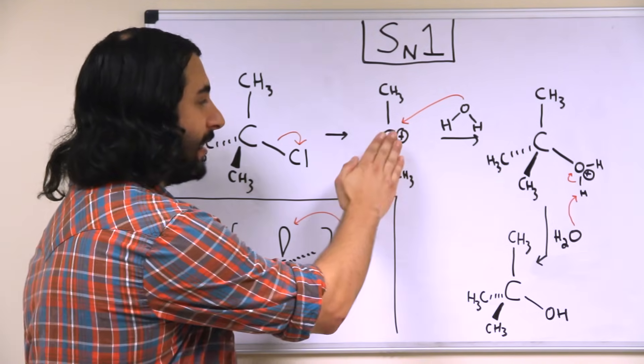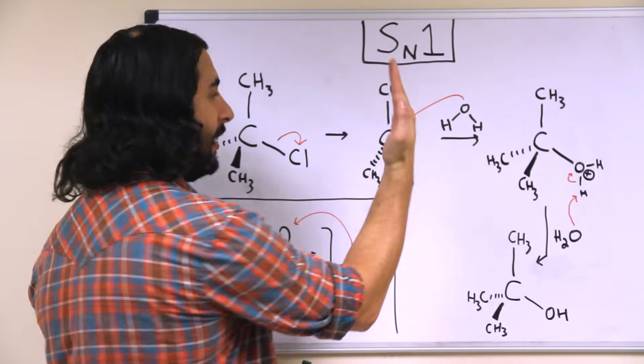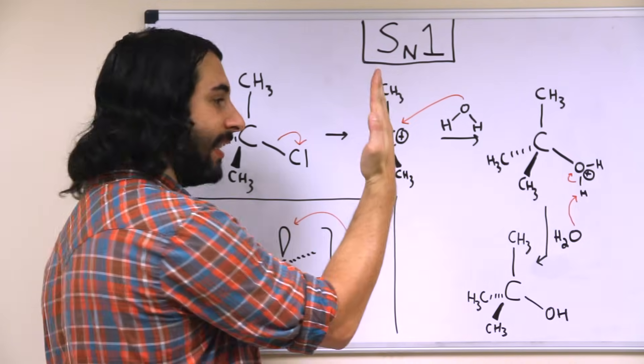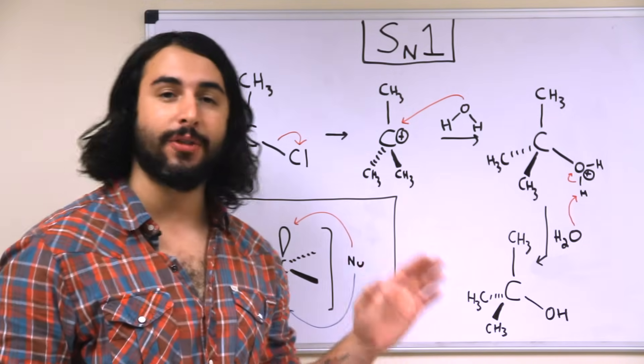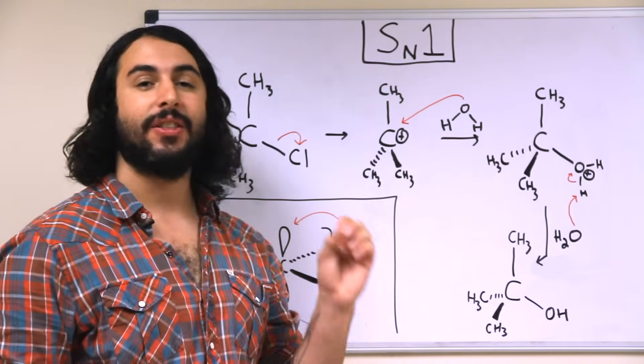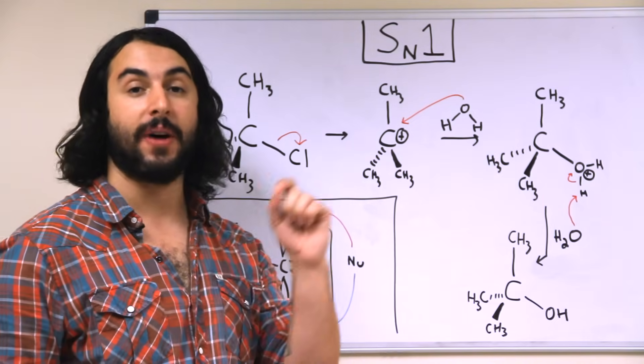So basically, this molecule is a plane perpendicular to the board. We're looking at it edge-on like this. So now that we have the carbocation intermediate, the second step is for the nucleophile to attack.